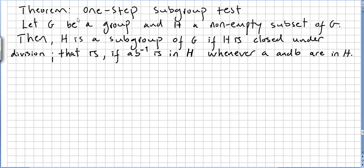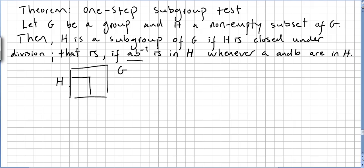Let G be a group and H a non-empty subset of G. Then H is a subgroup of G if H is closed under division — that is, if AB⁻¹ is in H whenever A and B are in H. You can check video 8 where I explain that you have a group G and a subset with some elements. But here I'm going to get directly into the proof.